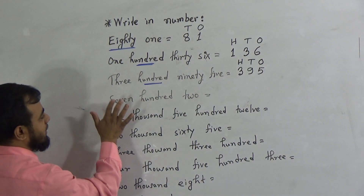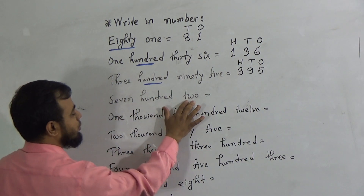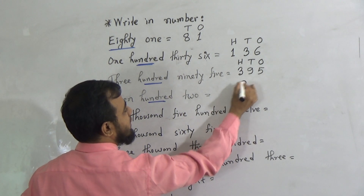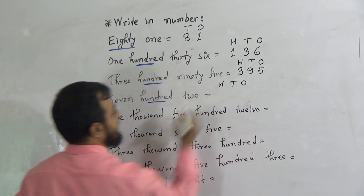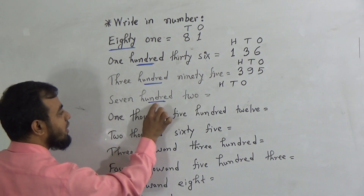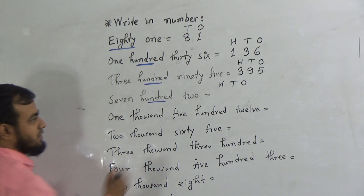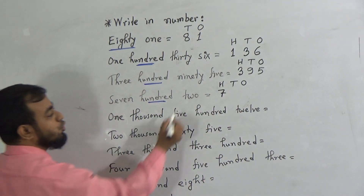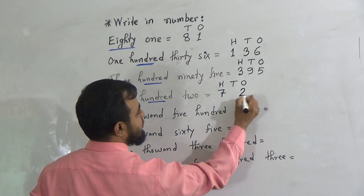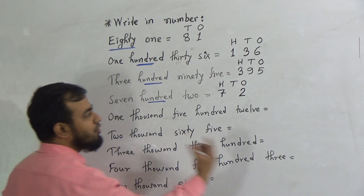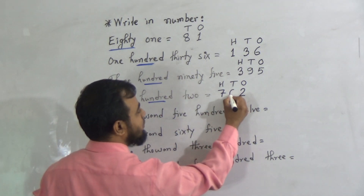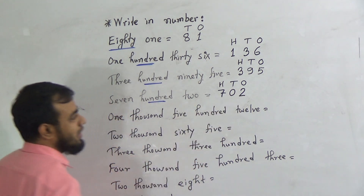Now come to the next number. It is 702. The highest place value again here is 100. So we must take up to the 100s place. It is 1s place, 10s place, 100s place. To write down 700, we will write down 7 in the 100s place. And to write down 2, we must write down 2 in the 1s place. We have no digit in the 10s place, so we will fill up this place with the digit 0. This makes 702. It is so easy, right?